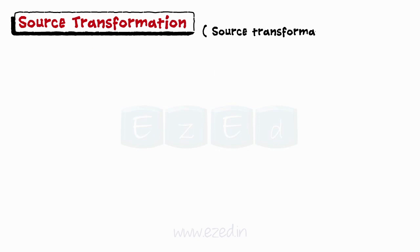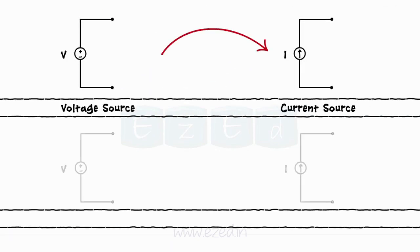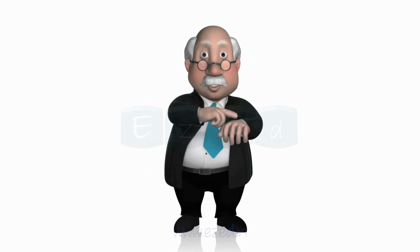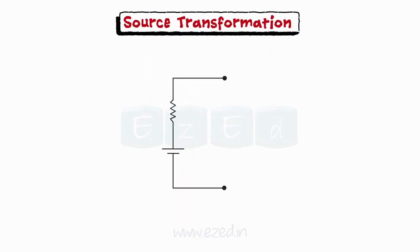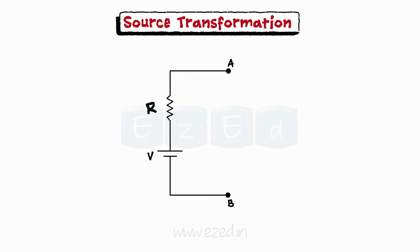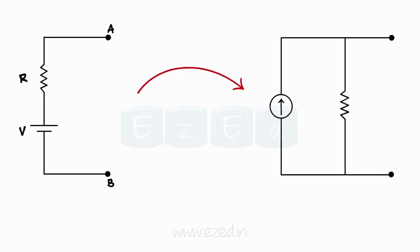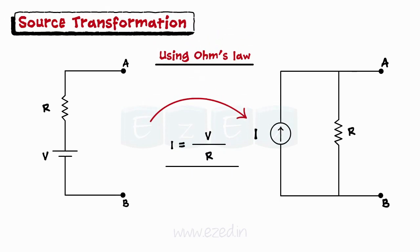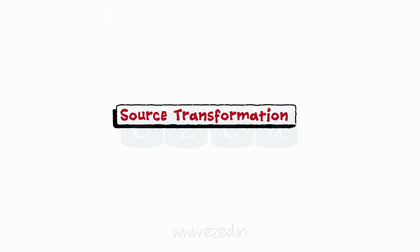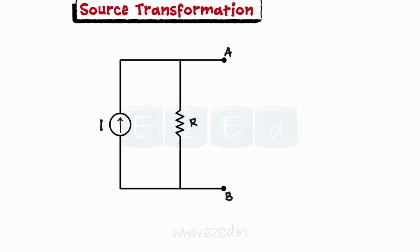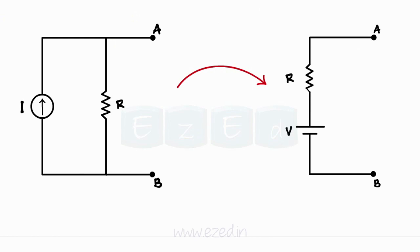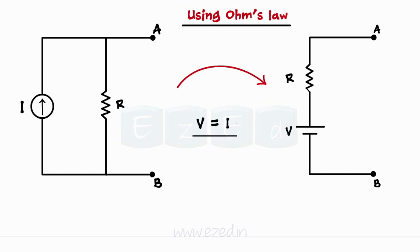Source transformation means transforming a voltage source into its equivalent current source and vice versa. Using source transformation, a voltage source connected in series with a resistance can be replaced by an equivalent current source connected in parallel with the same resistance using Ohm's law: I = V/R. Similarly, a current source connected in parallel to a resistor can be replaced by an equivalent voltage source connected in series with that resistor using V = I × R.